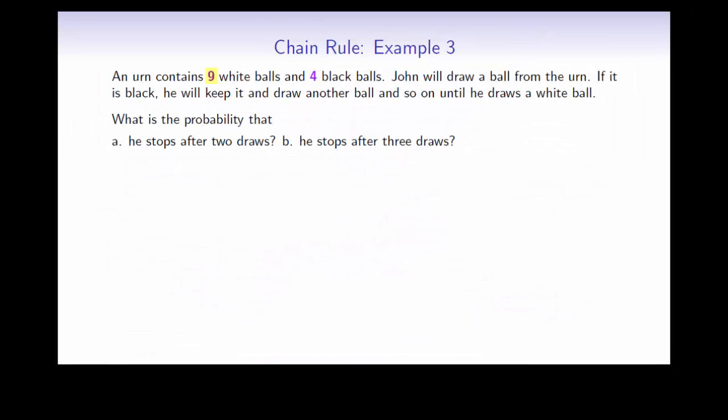Suppose that we have 9 white balls and 4 black balls. John is going to draw balls from this urn, and if it turns out to be black, he will keep drawing more balls until eventually he will get a white ball. What is the probability that he stops after 2 draws or 3 draws?